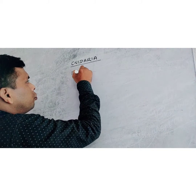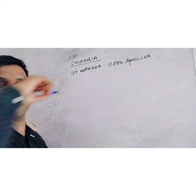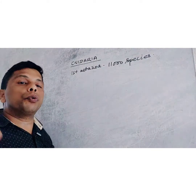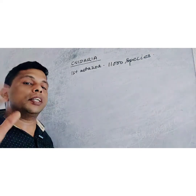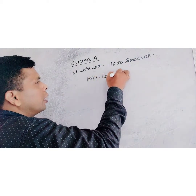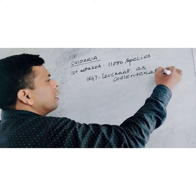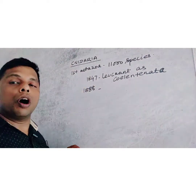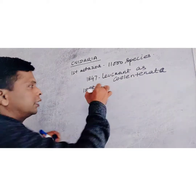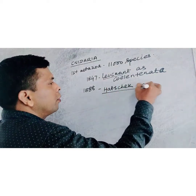Cnidaria are the first Metazoa, having approximately 11,000 species. In 1847, this phylum was named by Leuckart as Coelenterata. Then in 1888, this term Cnidaria was given by Herschek.